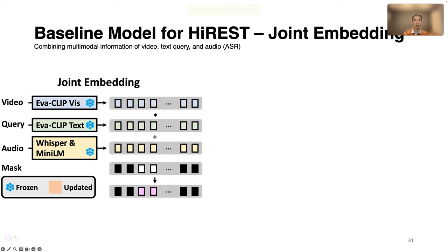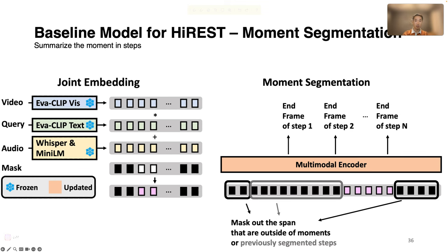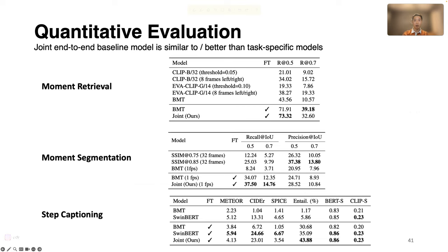For moment retrieval, moment segmentation, and step captioning tasks, we use a joint multimodal embedding combining video frames, text queries, and audio input. For moment retrieval, our multimodal transformer predicts the start and end frame for a video moment relevant to the text query. For moment segmentation, we iteratively predict the end timestamp of each step, masking out frames outside the moment or previously segmented steps. For step captioning, we use an encoder-decoder architecture to generate a caption for each step. We train the joint model in a multi-task setup, and our joint end-to-end model outperforms or shows competitive results compared to task-specific baselines.